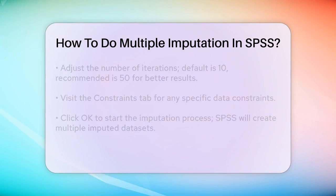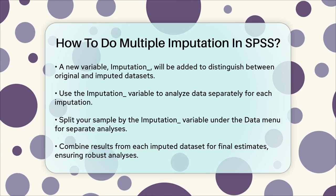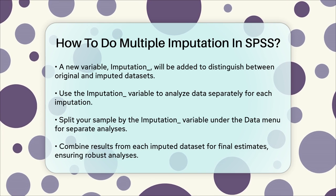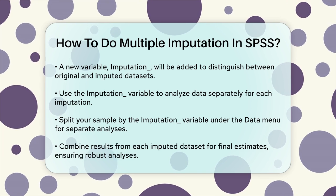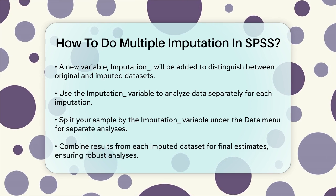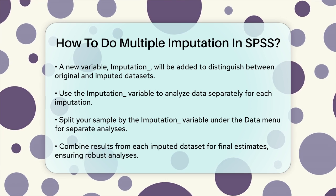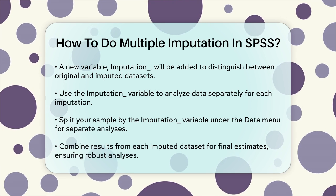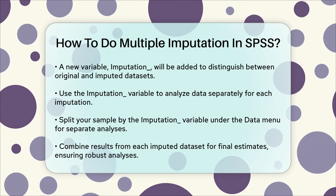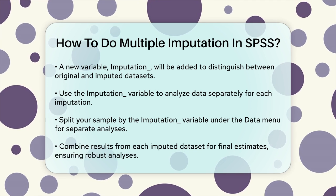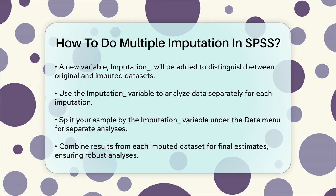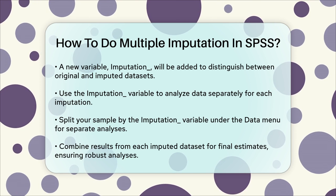After the imputation process, you can analyze your data using the imputed values. For example, if you're conducting regression analysis, you would run the analysis on each imputed dataset and then combine the results. This process helps in accounting for the uncertainty introduced by the missing data. You can split your sample by the imputation variable under the data menu, perform your analyses on each imputed dataset separately, and then combine the results to get your final estimates. By following these steps, you can effectively use multiple imputation in SPSS to handle missing data and ensure your analyses are robust and reliable.